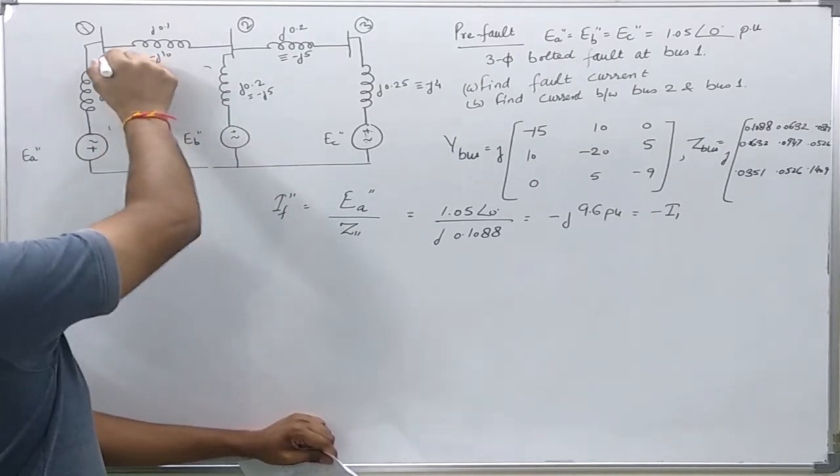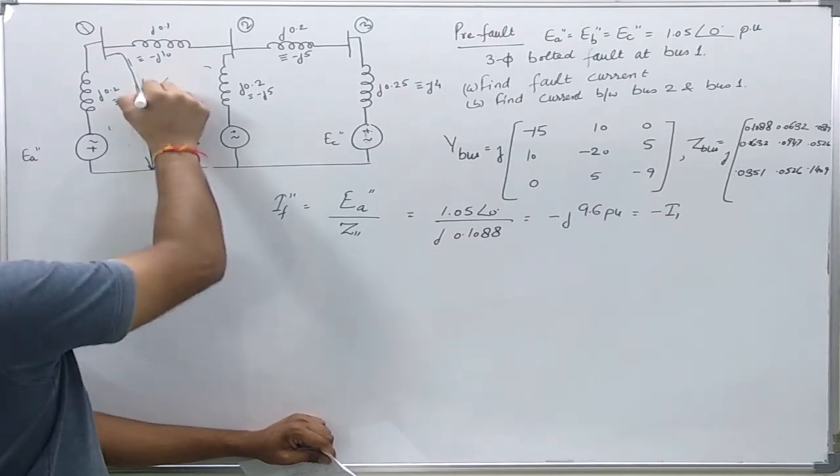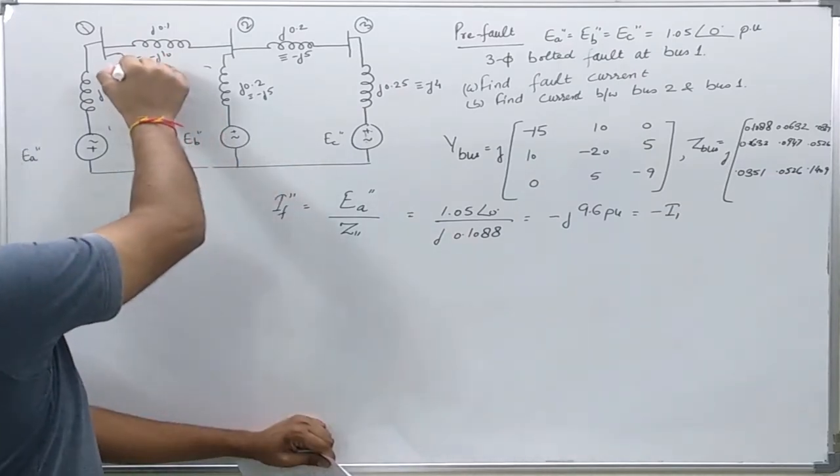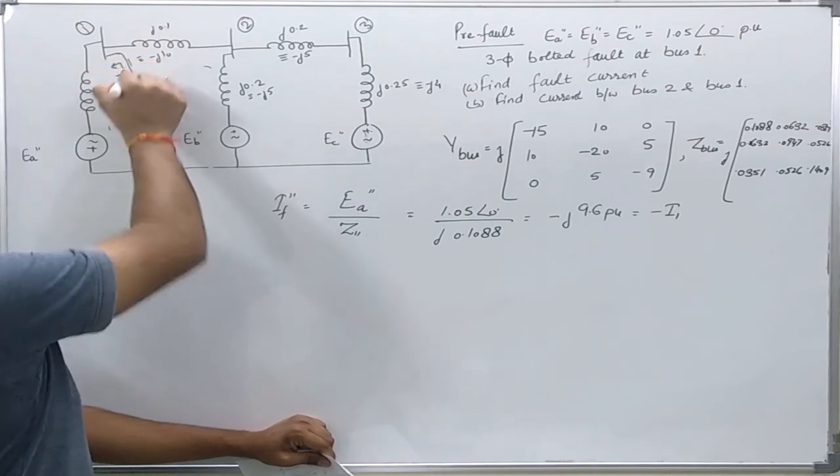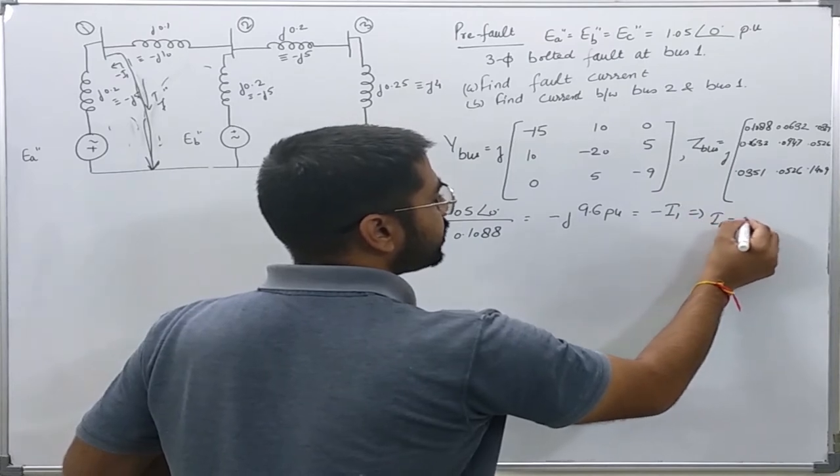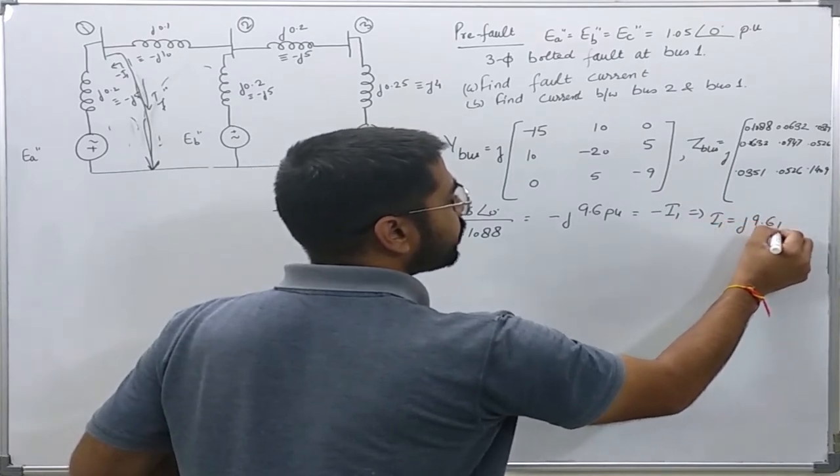Here I have found the current which is flowing into the fault. This is IF''. So this is equal to minus of I1, so it implies I1 is nothing but j9.6 per unit.